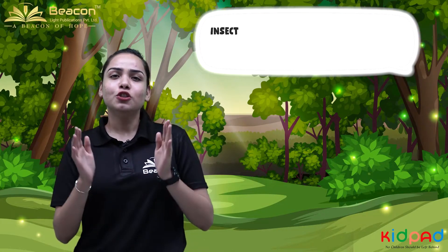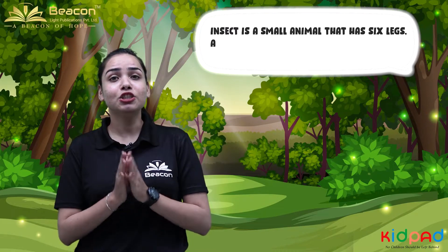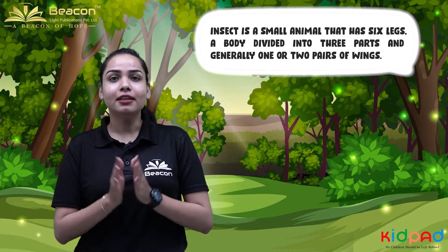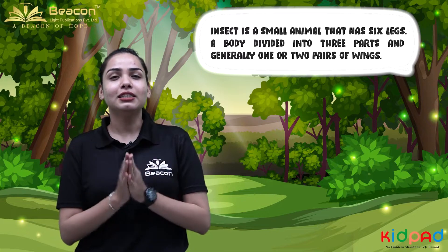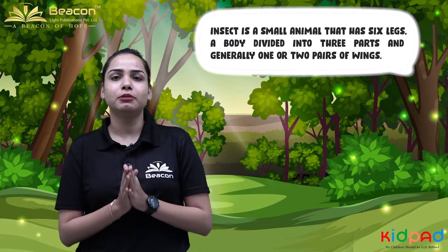Today we will study about insects from your book. An insect is a small animal that has six legs, and their body is divided into three parts.